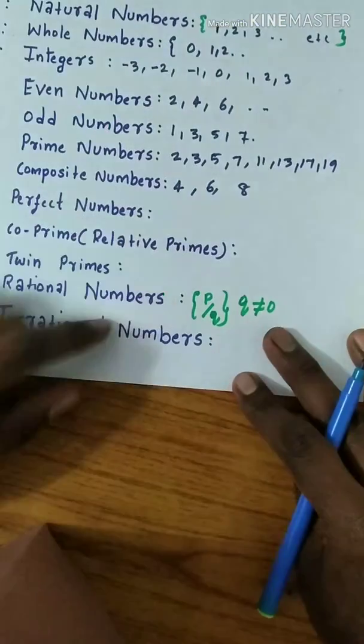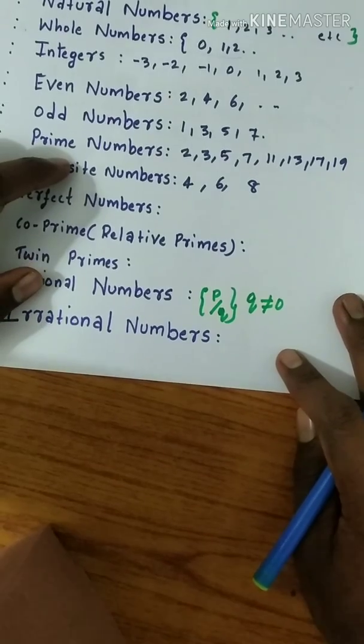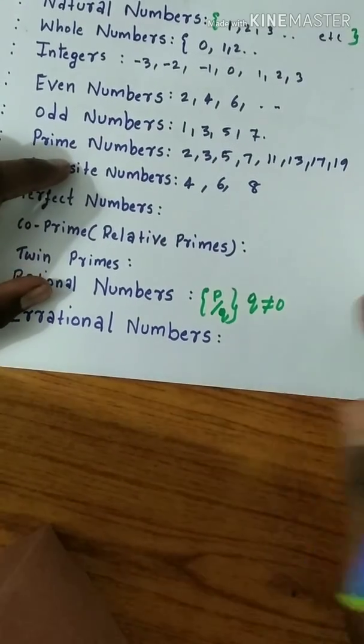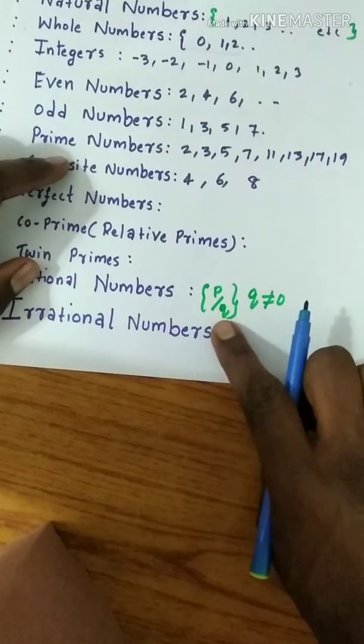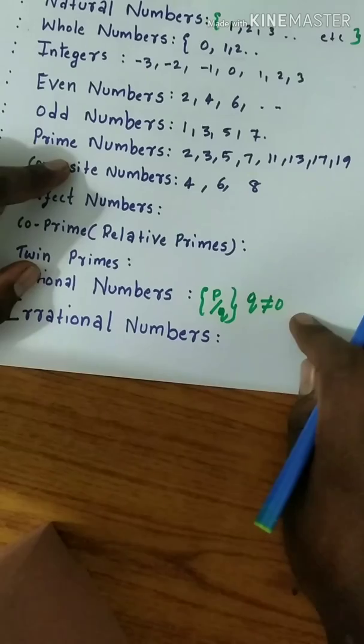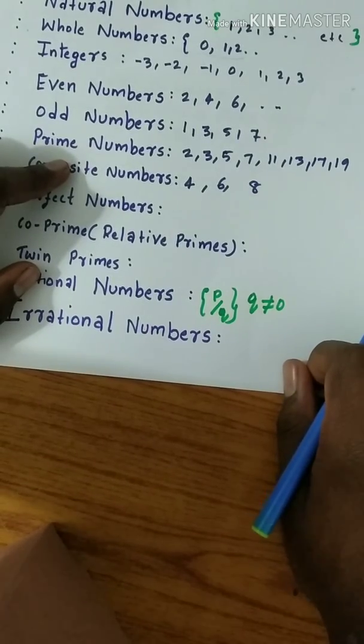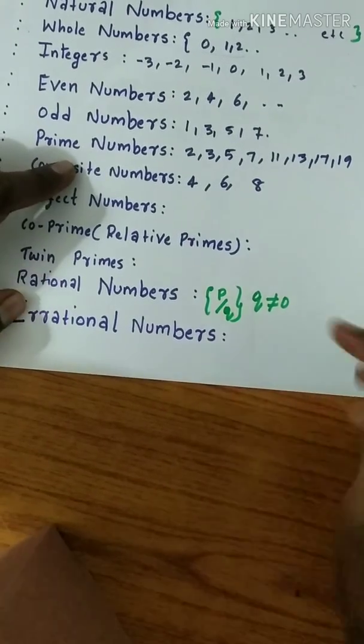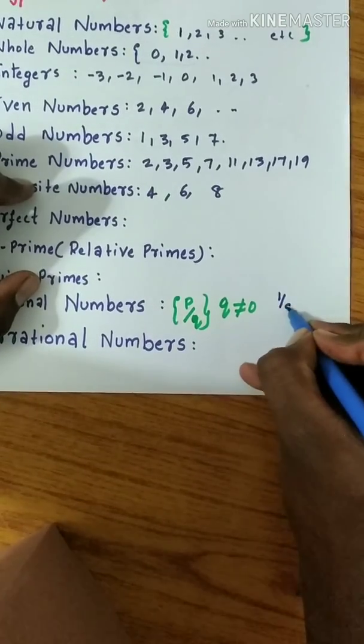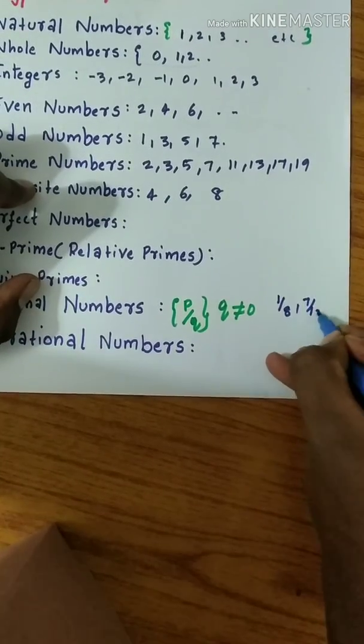Rational numbers - numbers which can be expressed in the form p/q where q is not equal to 0, and p and q are integers. Examples: 1/8, 7/12, and so on.